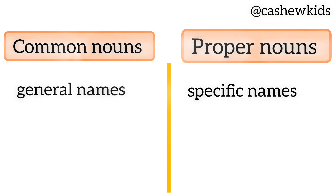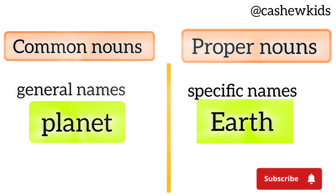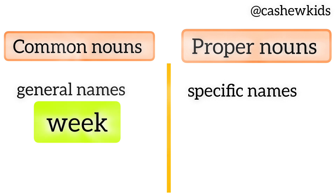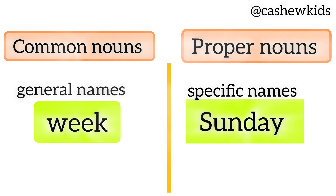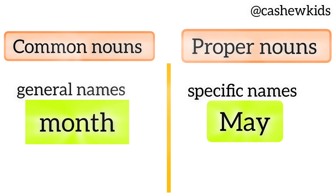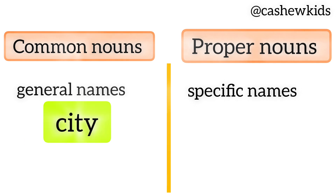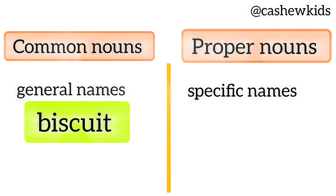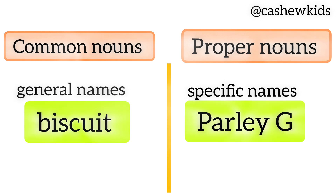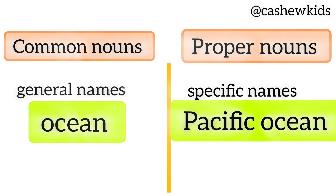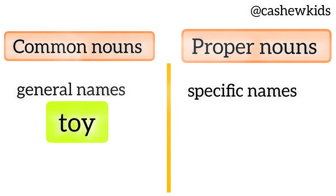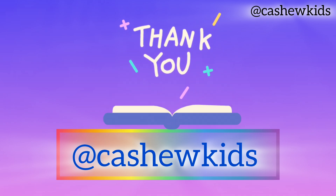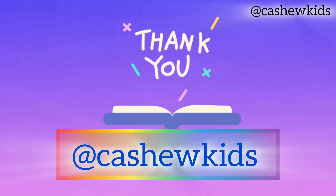Book — Fairy Tales. Planet — Earth. Festival — Holy Week. Sunday. Month — May. City — Paris. Language — English. Biscuit — Parle-G. Ocean — Pacific Ocean. Toy — Barbie. Hope we understood proper nouns and common nouns. Thank you for watching Cashew Kids!